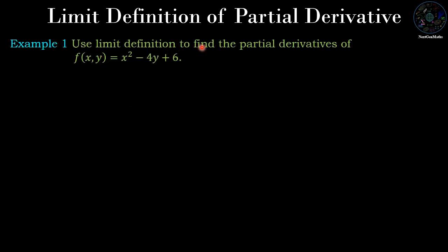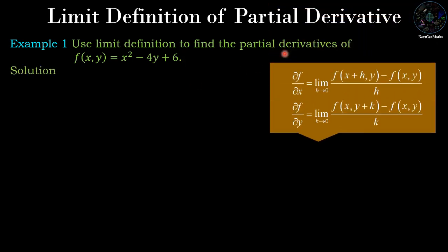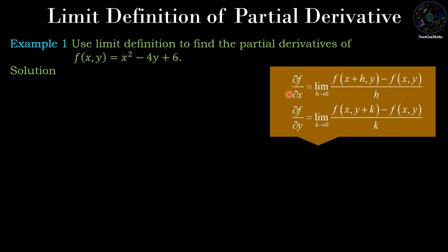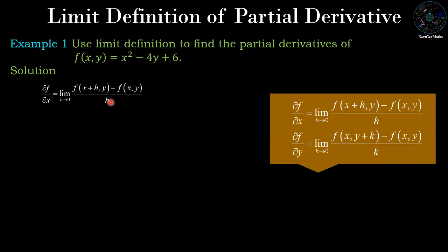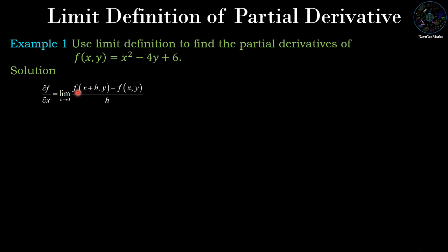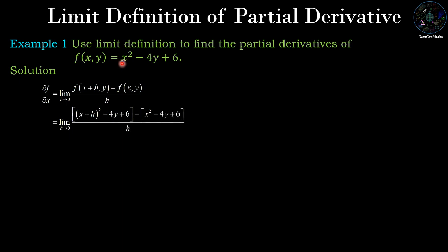Example 1: Use the limit definition to find the partial derivatives of f(x, y) = x² − 4y + 6. Using the definition, ∂f/∂x = limit h→0 of [f(x+h, y) − f(x, y)] / h. To evaluate this limit we need f(x+h, y), so we replace x by x+h: f(x+h, y) = (x+h)² − 4y + 6, and f(x, y) = x² − 4y + 6.